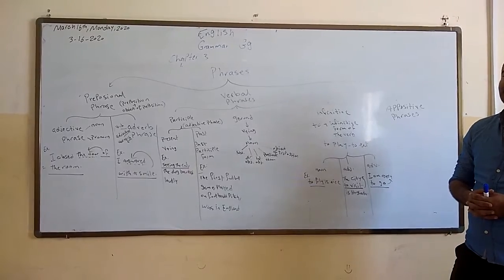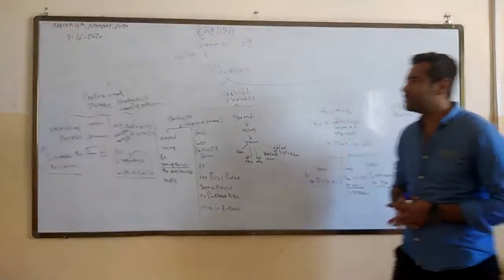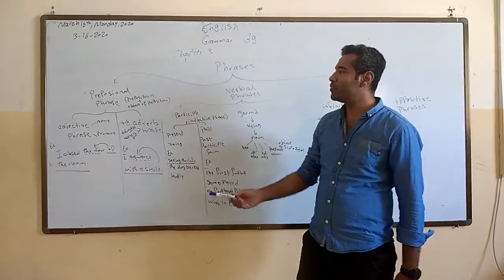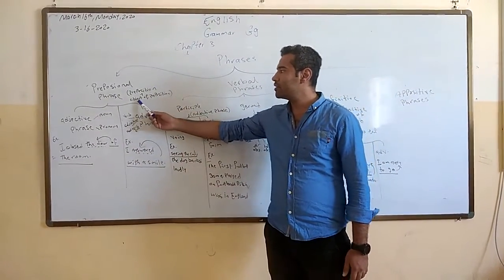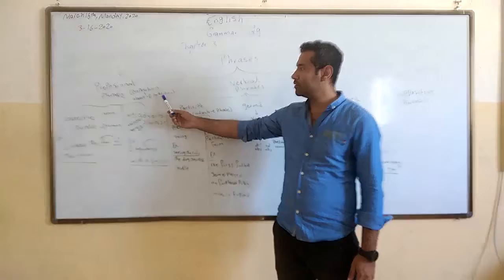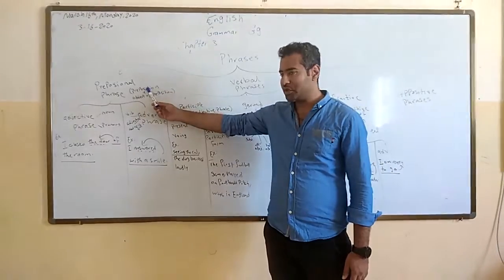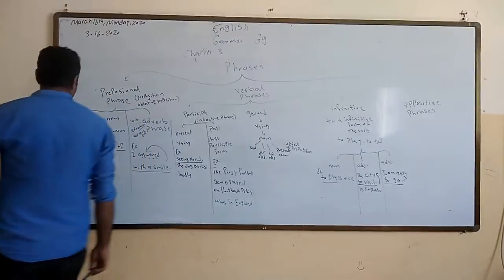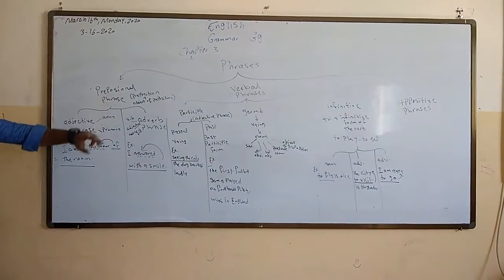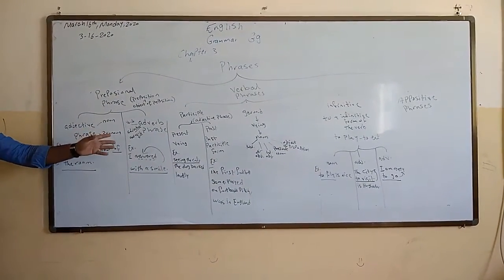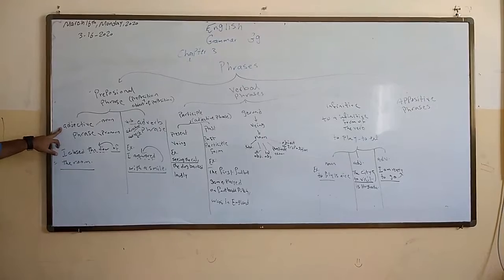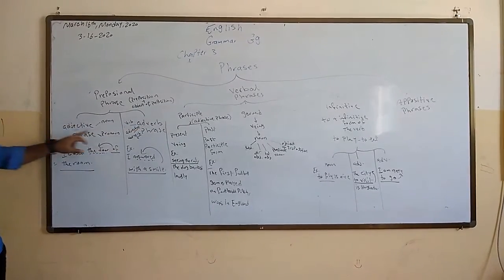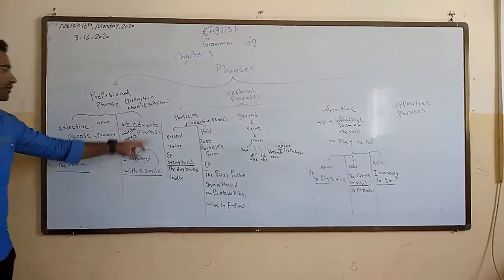The first type of phrase is the prepositional phrase. A prepositional phrase means a preposition plus the object of preposition. The prepositional phrase has two functions in different sentences: one works as an adjective and the other one works as an adverb. So we have adjective phrase and adverb phrase.